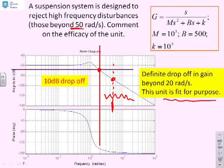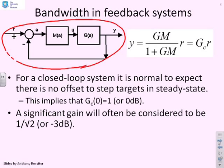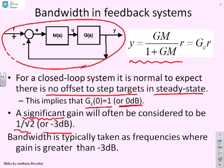What about feedback? Here's a typical feedback loop with a compensator and a system. Here's the associated closed-loop transfer function, G over 1 plus GM. If you have a closed-loop system, it's normal to expect no offset to step targets in steady state. That tells you that Gc of 0 is 1 or 0dB. Here, we don't need to worry so much about the relative term because steady state is always 1, typically. Therefore, for the closed-loop, significant can be fixed. It's going to be something like 1 over root 2 or minus 3dB. For closed-loop systems, bandwidth would typically be taken as frequencies where the gain is greater than minus 3dB, and that will explain why in the books this is often taken as a definition.